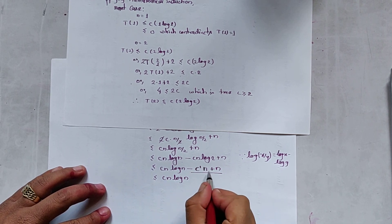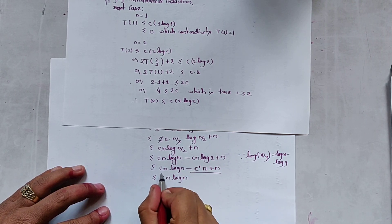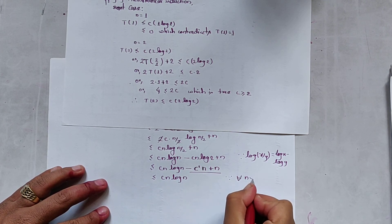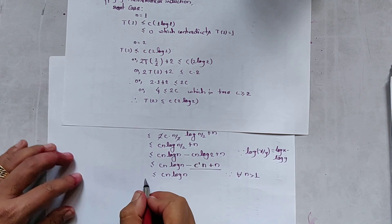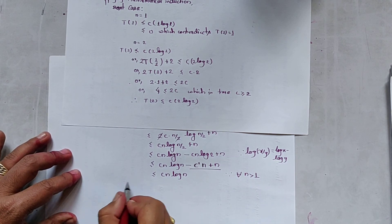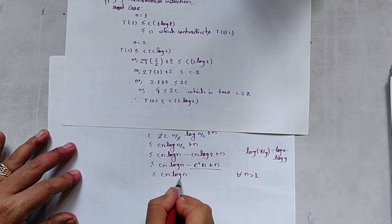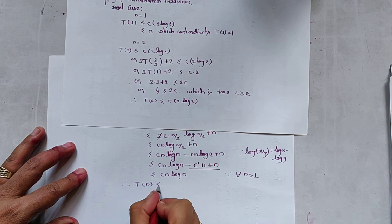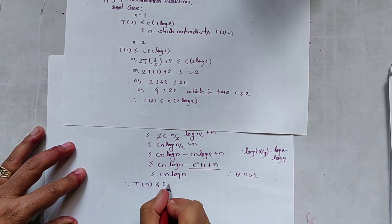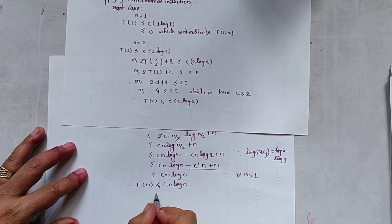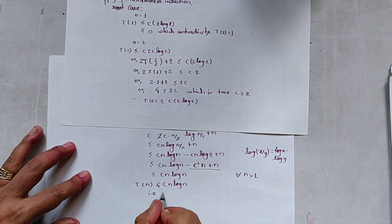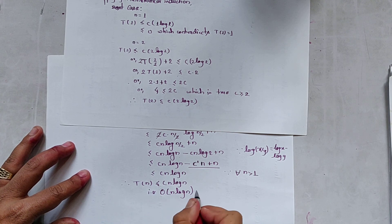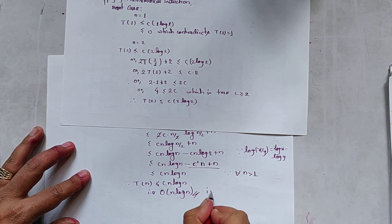Since cn log 2 is a constant multiple and n grows slower than n log n for all n > 1, the term n is absorbed, and we conclude T(n) ≤ cn log n. Therefore our supposition is true: T(n) = O(n log n).